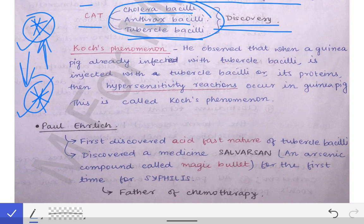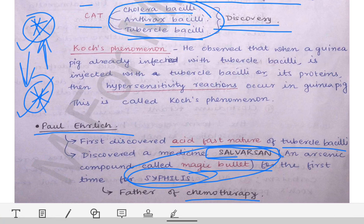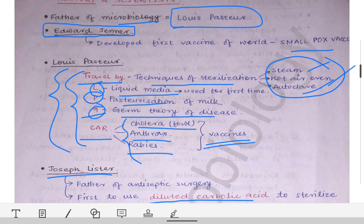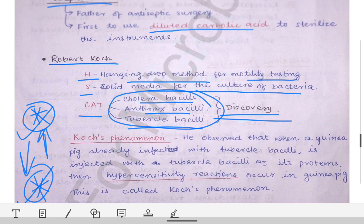The next scientist is Paul Ehrlich. He was the first to discover the acid-fast nature of the tubercle bacilli, and he was the first to discover salvarsan, which was the first medication used for syphilis treatment. At his time it was called the 'magic bullet,' and since it was the first drug used for syphilis, he is also called the father of chemotherapy. To summarize: father of microbiology is Louis Pasteur, father of antiseptic surgery is Joseph Lister, and father of chemotherapy is Paul Ehrlich. These should be at your tongue tip as they may be directly asked as MCQs in university exams.